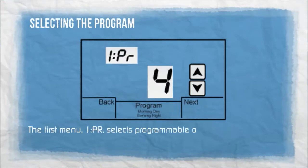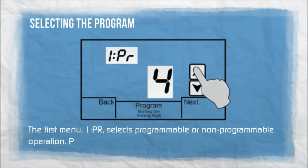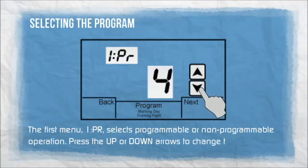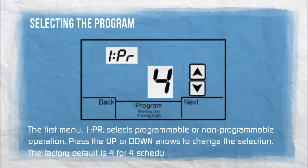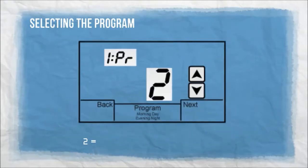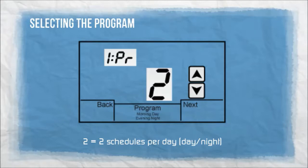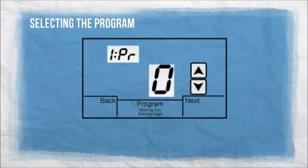The first menu, 1PR, selects Programmable or Non-Programmable Operation. Press the up or down arrows to change the selection. The factory default is 4 for 4 schedules per day. 2 is for 2 schedules per day — day, night. 0 is for manual mode, non-programmable.